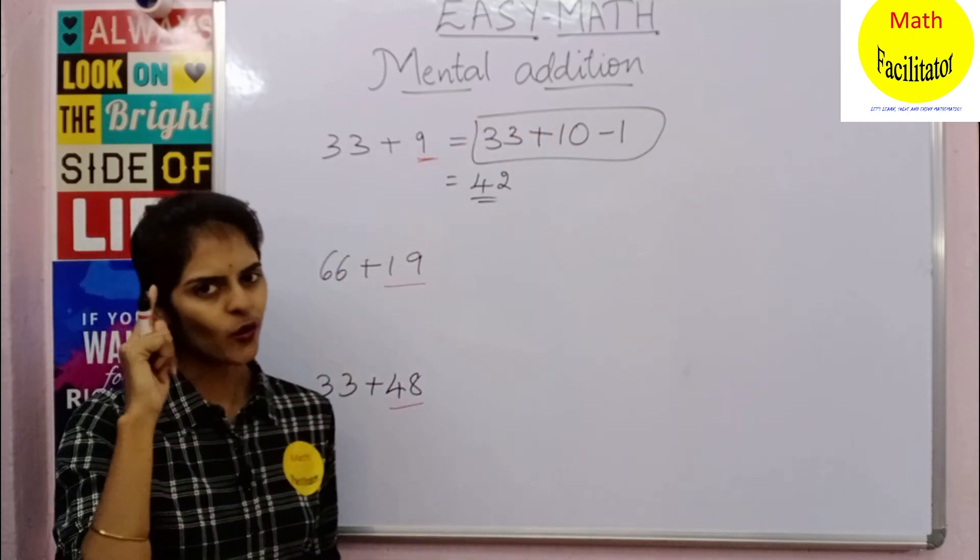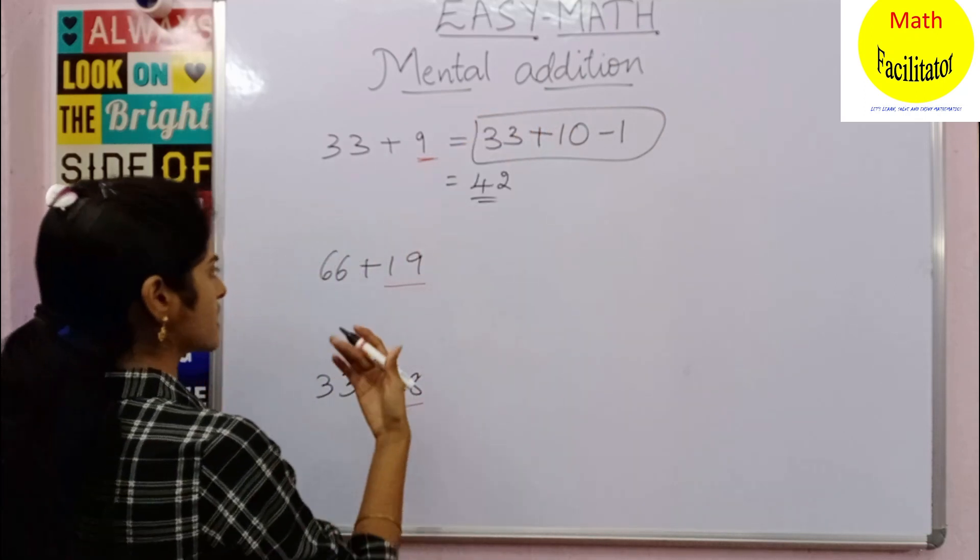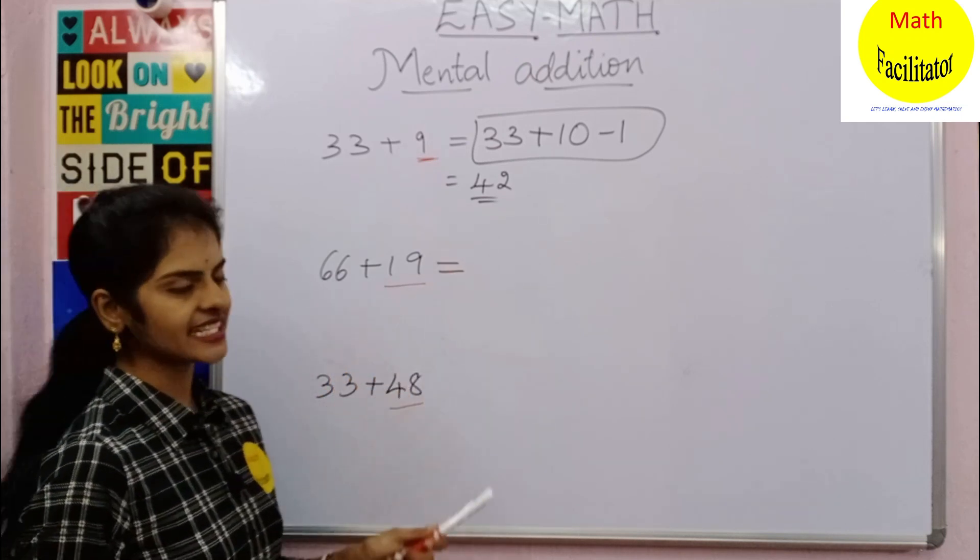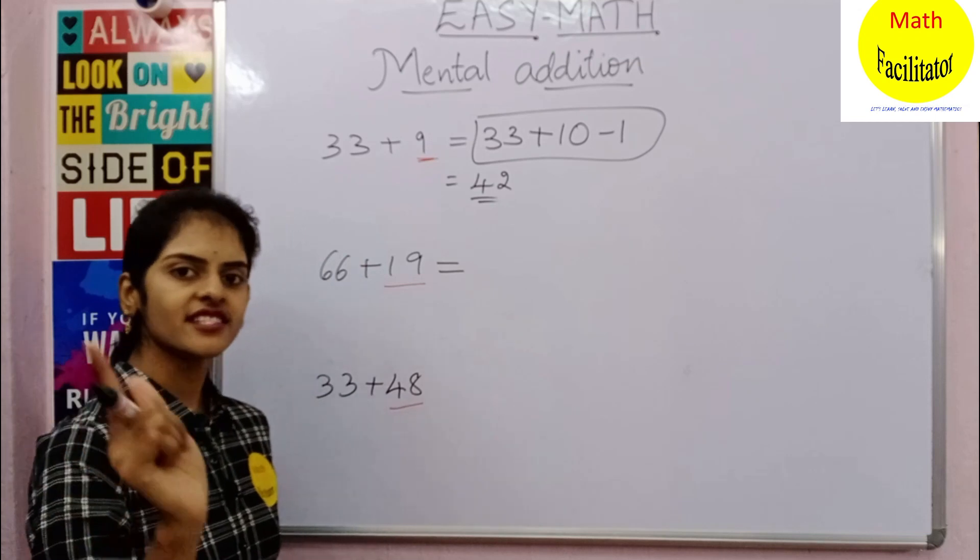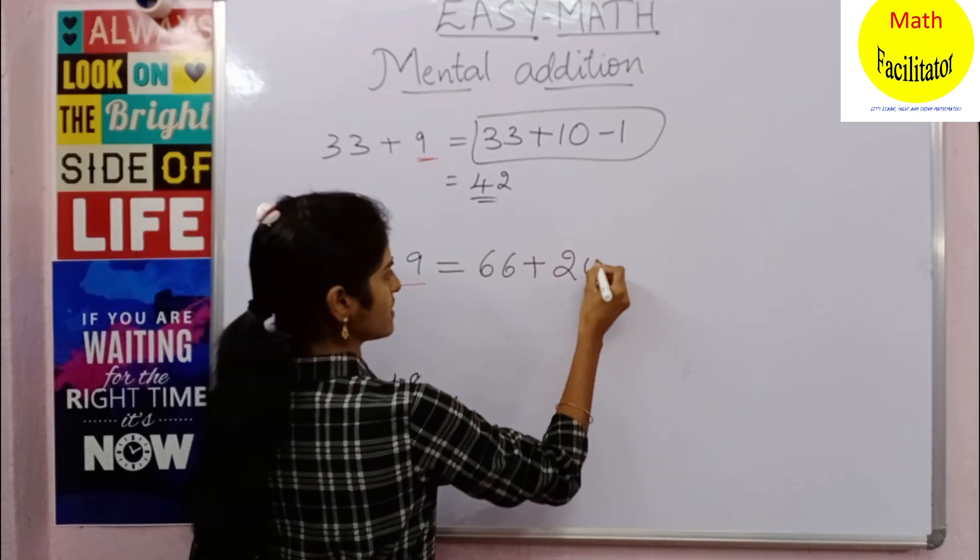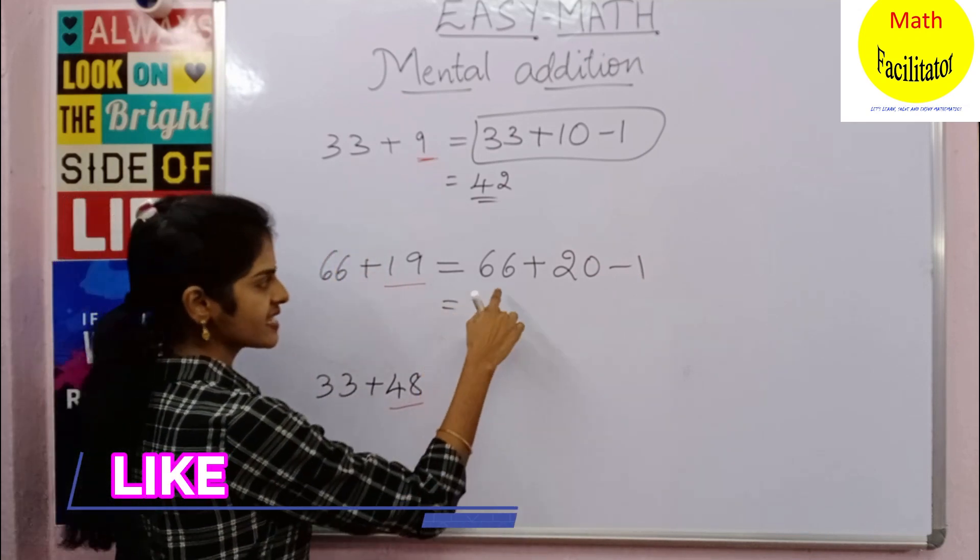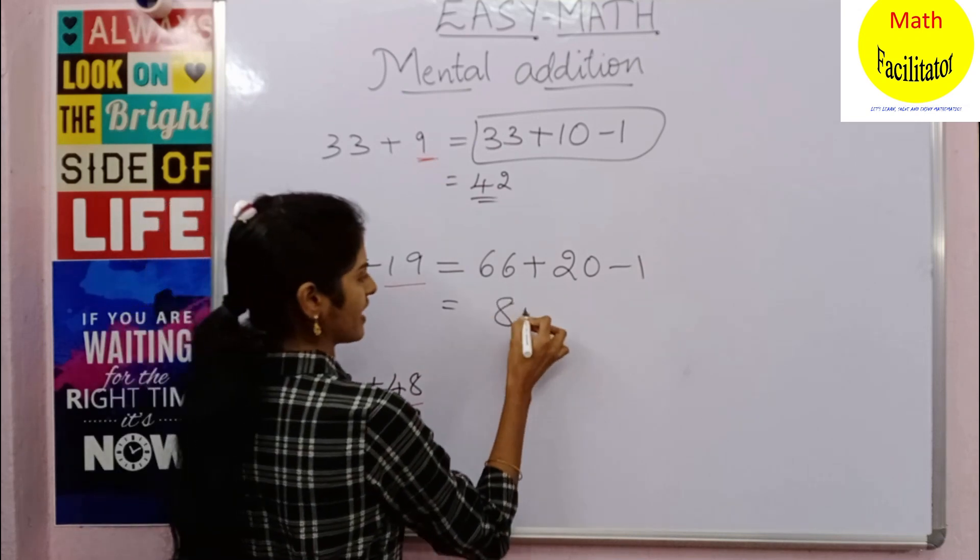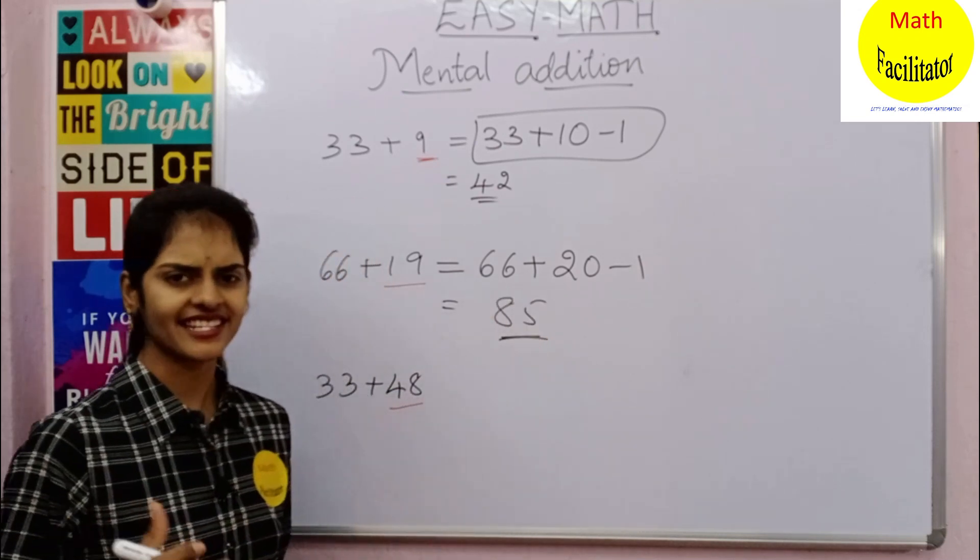Now next, 66 plus 19. So 19 you can write as 20 minus 1. So 66 plus 20 is 86, minus 1 is 85. So simple, the answer is 85.